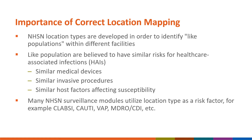The NHSN location types have been developed to identify populations within different facilities. NHSN tries to categorize patients and the incidence of HAIs and other events in like populations. These patients are believed to have similar risk of HAIs — they could have similar devices, similar invasive procedures, and they may have similar host factors.